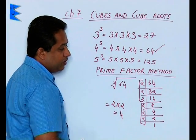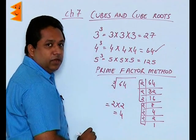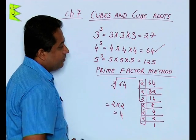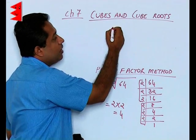In the same method we can find out the cube root of other numbers. Suppose we want to find out the cube root of 125. So cube root of 125, again by prime factor method.